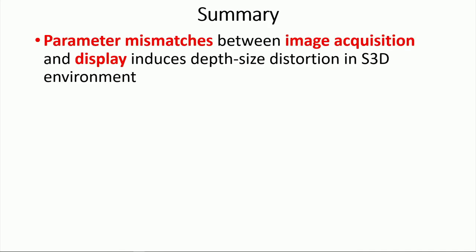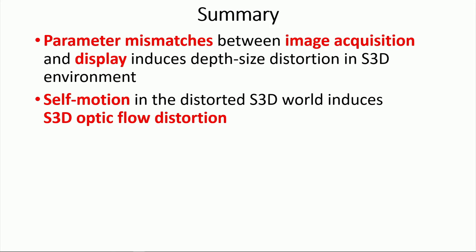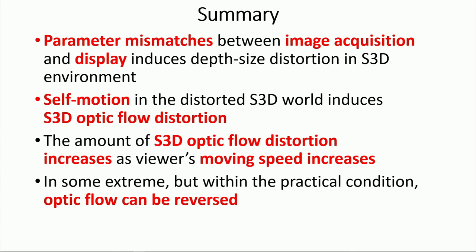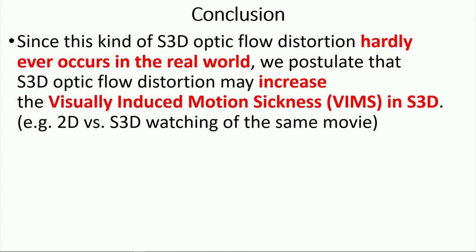In summary, parameter mismatches between the image acquisition and display induce depth-size distortion in 3D environment, and self-motion in this kind of distorted 3D environment causes the 3D optic flow distortion. The amount of the optic flow distortion increases as the viewer's moving speed increases and also the amount of mismatches. In some extreme, but within the practical range, optic flow can be reversed. Since this kind of 3D optic flow distortion hardly ever occurs in the real world, we postulate that optic flow distortion in stereoscopic 3D may increase the visually induced motion sickness.